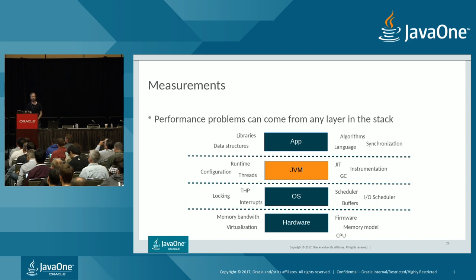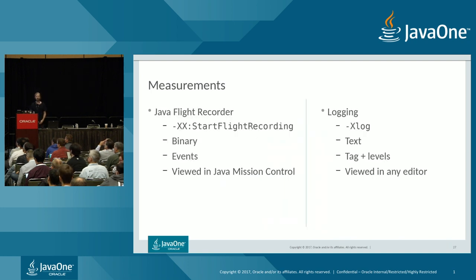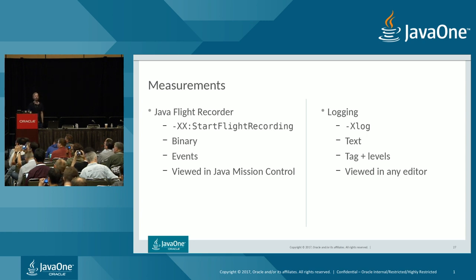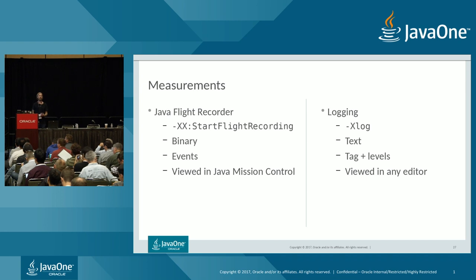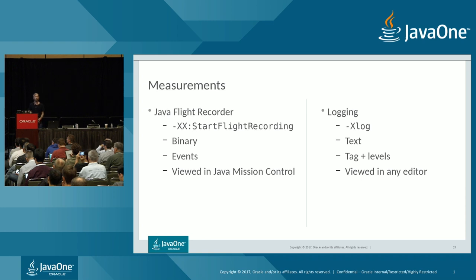To get data from the JVM, we have two main options. First, Java Flight Recorder, enabled with the flag -XX:StartFlightRecording — this produces a binary recording where you choose which events to subscribe to, viewable in Java Mission Control. Second, text-based logging: in JDK 9, the new unified logging framework was introduced behind the flag -Xlog. Logs are in text format and you use tags and levels to specify what information you want from the JVM.